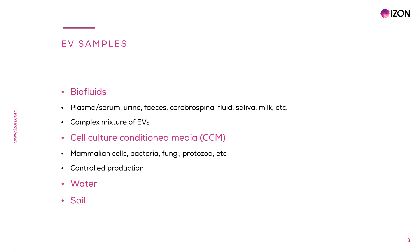EVs can be found nearly everywhere. Some of the most studied EV samples are listed here. Biofluids, for example, are any biological fluid obtained from the body of an animal. In the human body, every different cell type can release EVs into the surrounding space, forming a complex mixture of EVs with different origins and composition in biofluids like plasma, urine and milk. The study of biofluid EVs has significant potential for diagnostic purposes, as circulating EVs reflect the pathological states from originating cells.